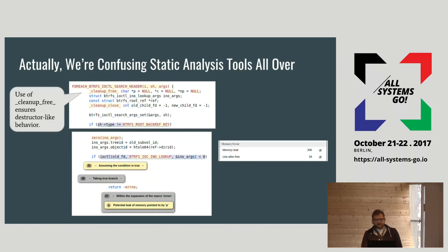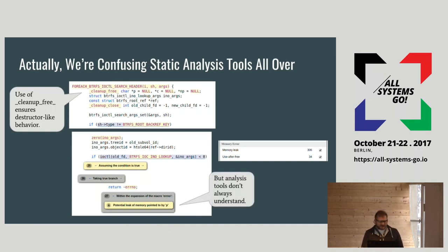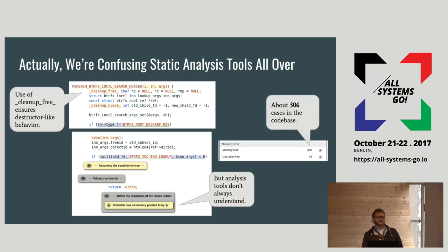This is using Clang Analyzer, a popular static analysis tool built into the LLVM codebase. It's totally open source and a great tool for diagnosing things — but it doesn't work on our codebase because we use functionality like cleanup_free that it doesn't understand. This code does not actually leak because cleanup_free gets invoked when the variable goes out of scope, but the analysis tool considers it a potential memory leak. There are about 306 instances of this in the codebase where Clang's static analyzer thinks there's a problem even if there's not. It's really hard to improve code quality when we have that many false positives.